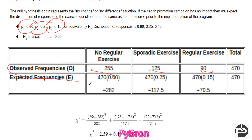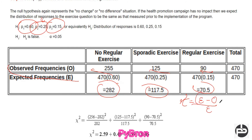Now, what is the expected value? So: 470 × 0.6 = 282; 470 × 0.25 = 117.5 (for somewhat); and for regular exercise, 470 × 0.15 = 70.5. These will be our expected values. Now if we apply the Chi-Square formula — observed minus expected, squared, divided by expected — we get a Chi-Square calculated value of 8.46. You can verify this with a calculator; I have already calculated it for you.